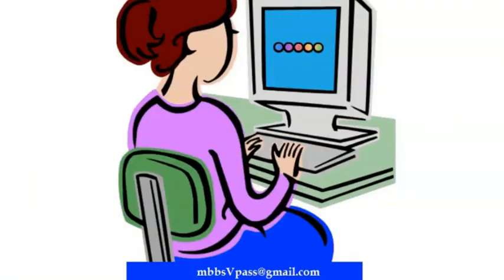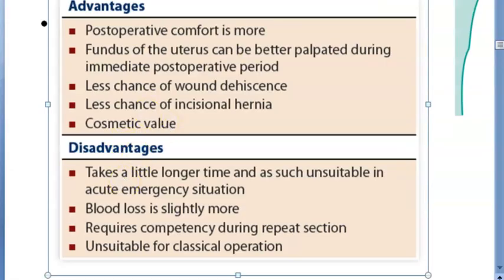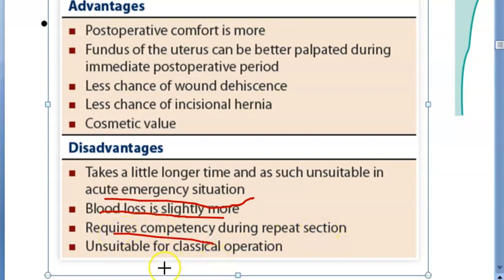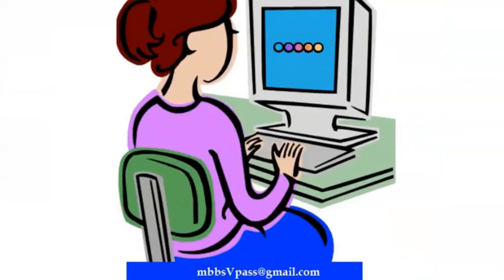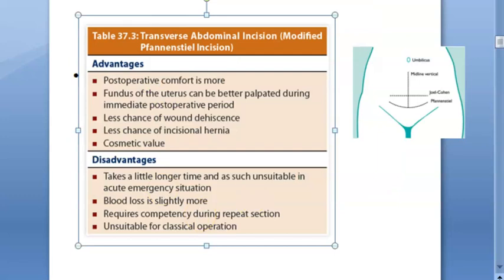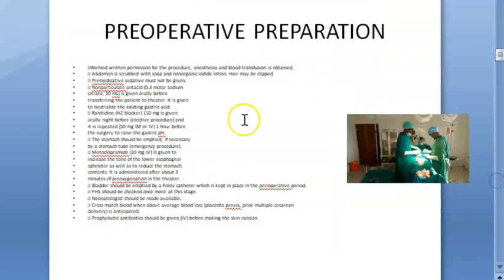The disadvantages of the Pfannenstiel incision are: it takes a little longer time and is therefore unsuitable in an emergency; blood loss is slightly more; it requires greater competency during a repeat cesarean section; and it is unsuitable for a classical operation. Wound dehiscence is more compared to other incisions.